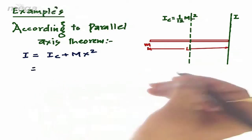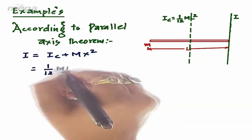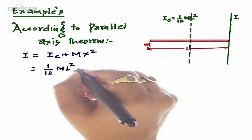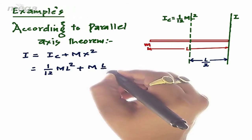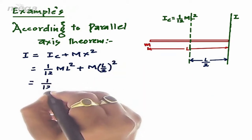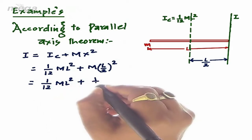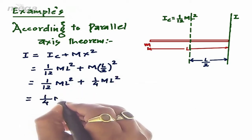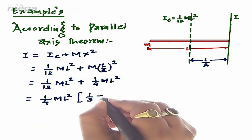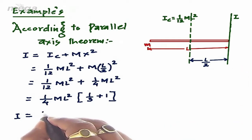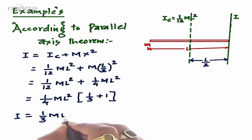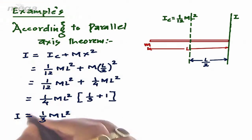Since Ic = 1/12 ML², we have I = 1/12 ML² + M × (L/2)², because the distance between the centroidal axis and this given axis is L/2. This gives I = 1/12 ML² + 1/4 ML². Solving, I = 1/3 ML². So the moment of inertia along the axis passing through the tangent and parallel to the centroidal axis is equal to 1/3 ML².